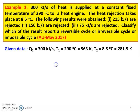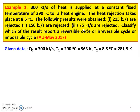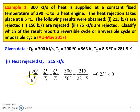Given data: Q1 heat supplied is 300 kilojoules per second, temperature T1 is 290 degree Celsius which equals 563 Kelvin. T2 equals 8.5 degree Celsius which is 281.5 Kelvin. There are 3 subdivisions. This problem uses the Clausius theorem.